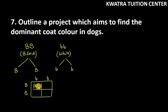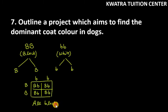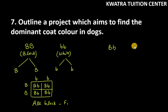So crossing capital B, capital B (male) with small b, small b (female), we get: capital B small b, capital B small b, capital B small b, capital B small b. So one is the male dog and the other is the female dog, and both offspring are black in color.